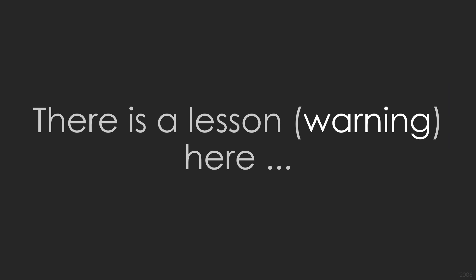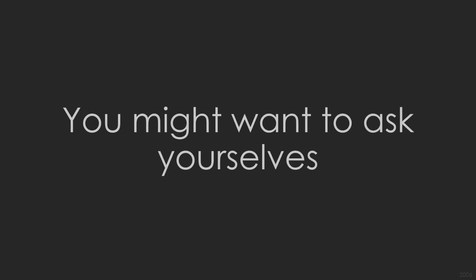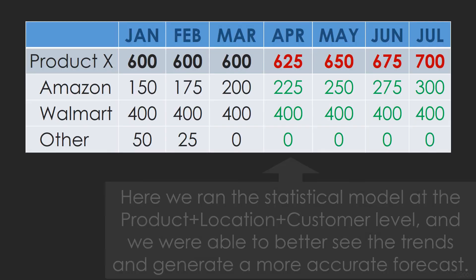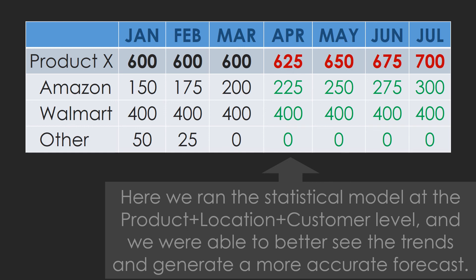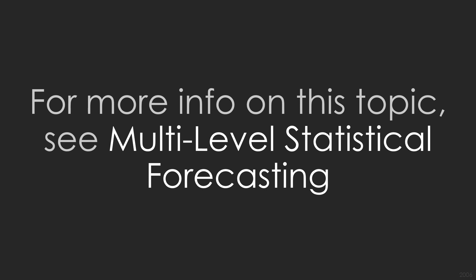There is a lesson warning here. If your proportional factor process becomes so complicated, you might want to ask yourselves if running the statistical model at a different level would be better. Here we ran the statistical model at the product location customer level and we were able to better see the trends and generate a more accurate forecast. For more information on this topic, see multi-level statistical forecasting.